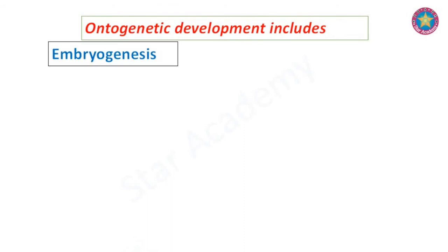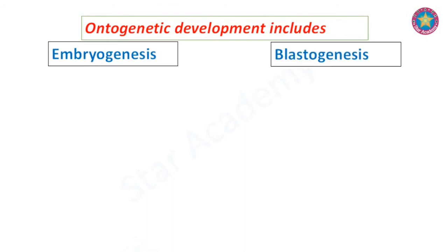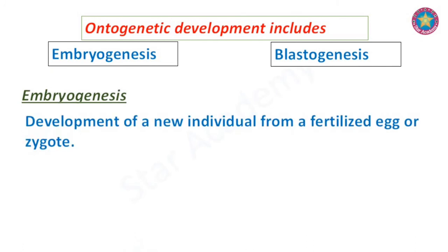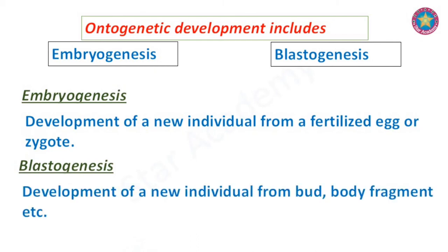Ontogenetic development includes embryogenesis and blastogenesis. Embryogenesis is the development of a new individual from a fertilized egg or zygote, while blastogenesis is the development of a new individual from a bud or body fragment.